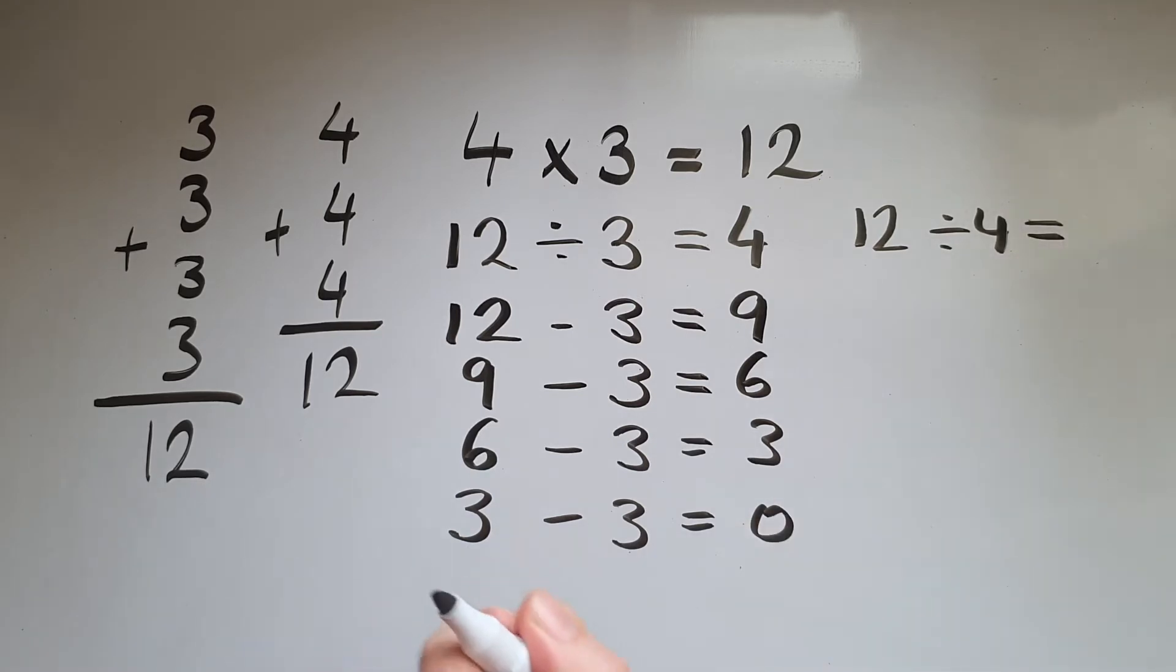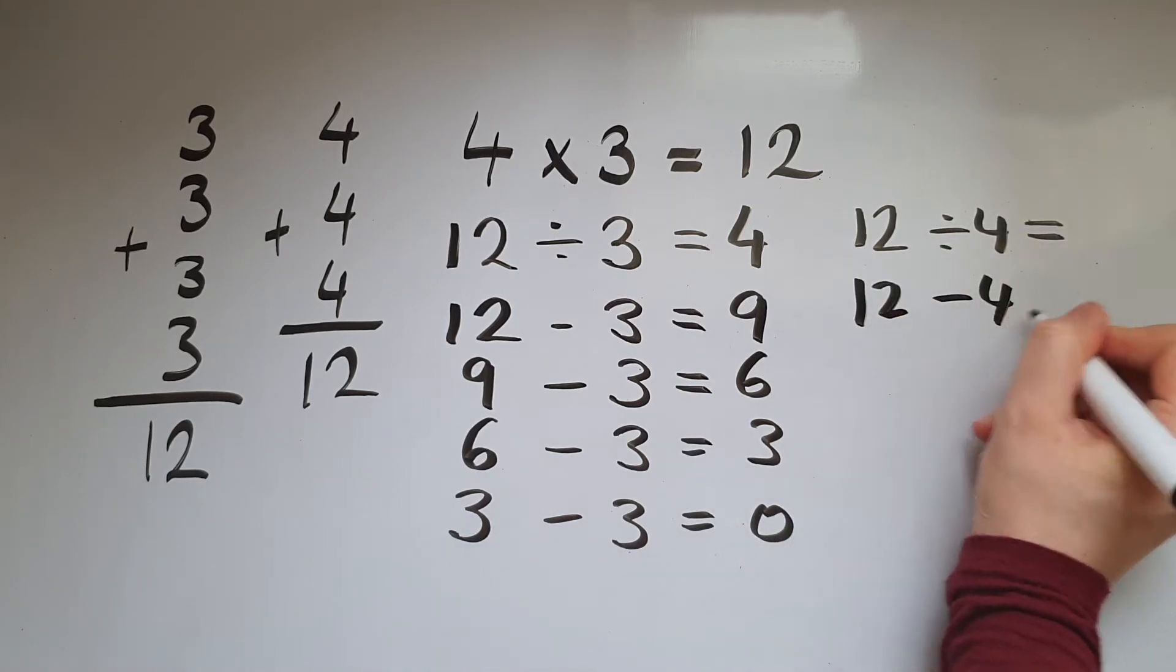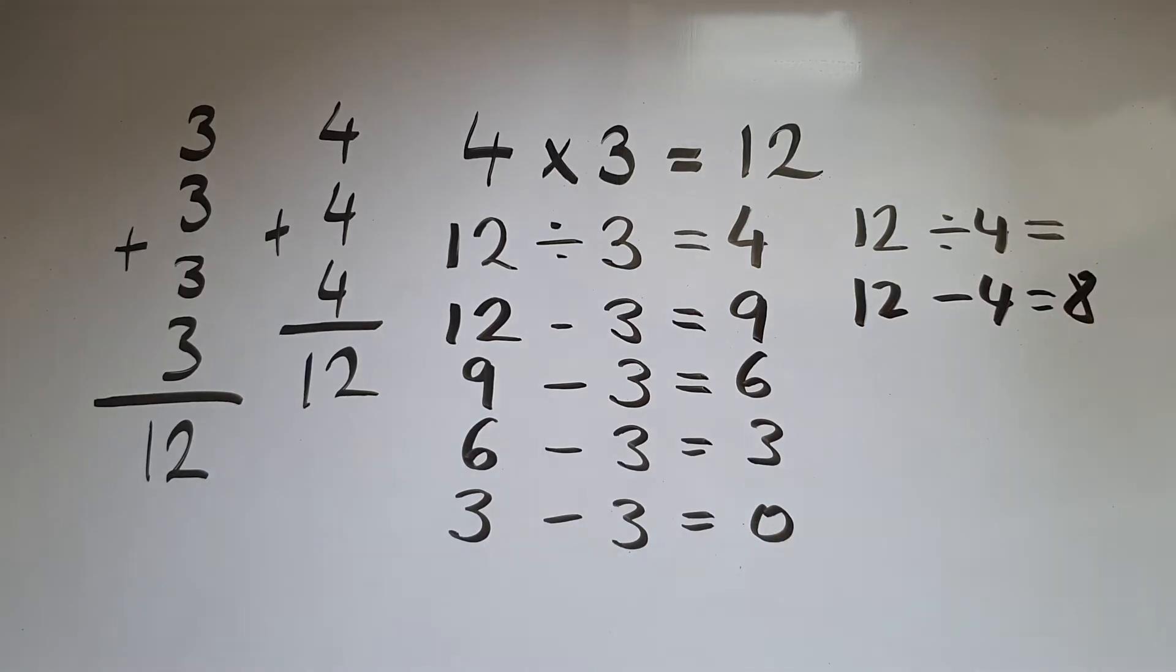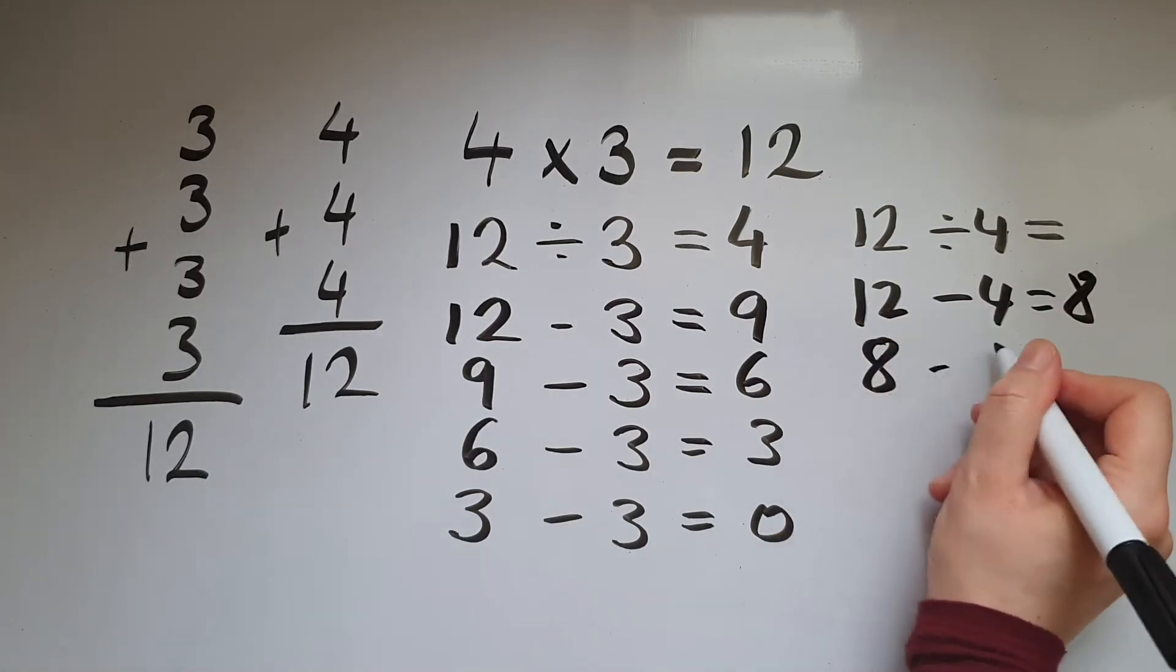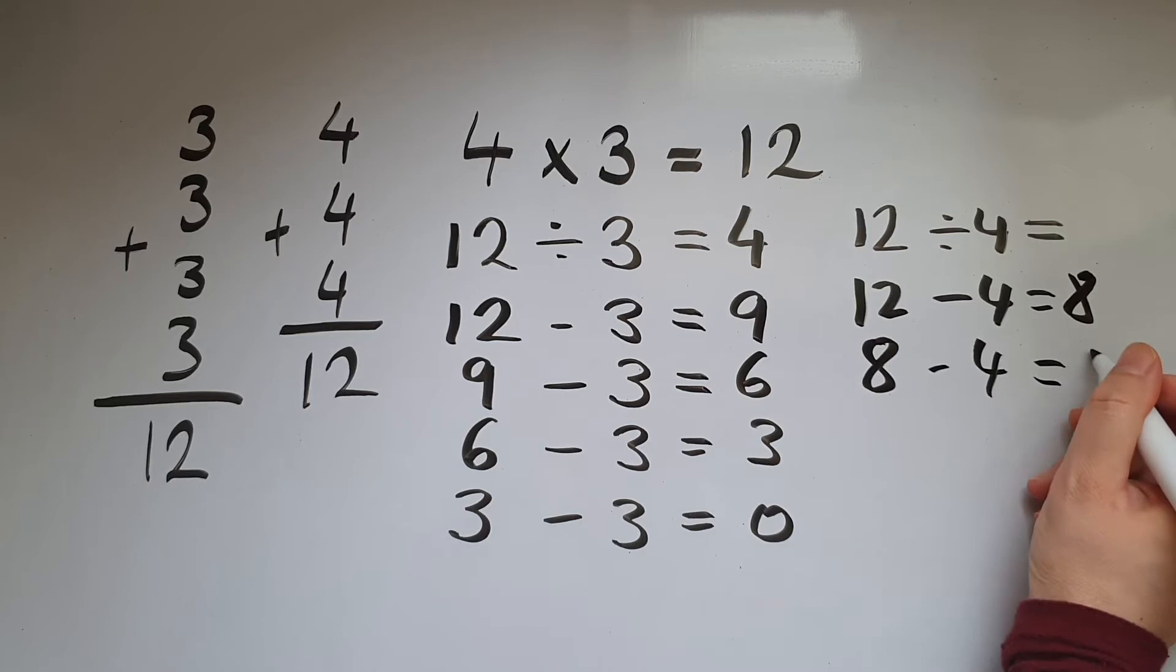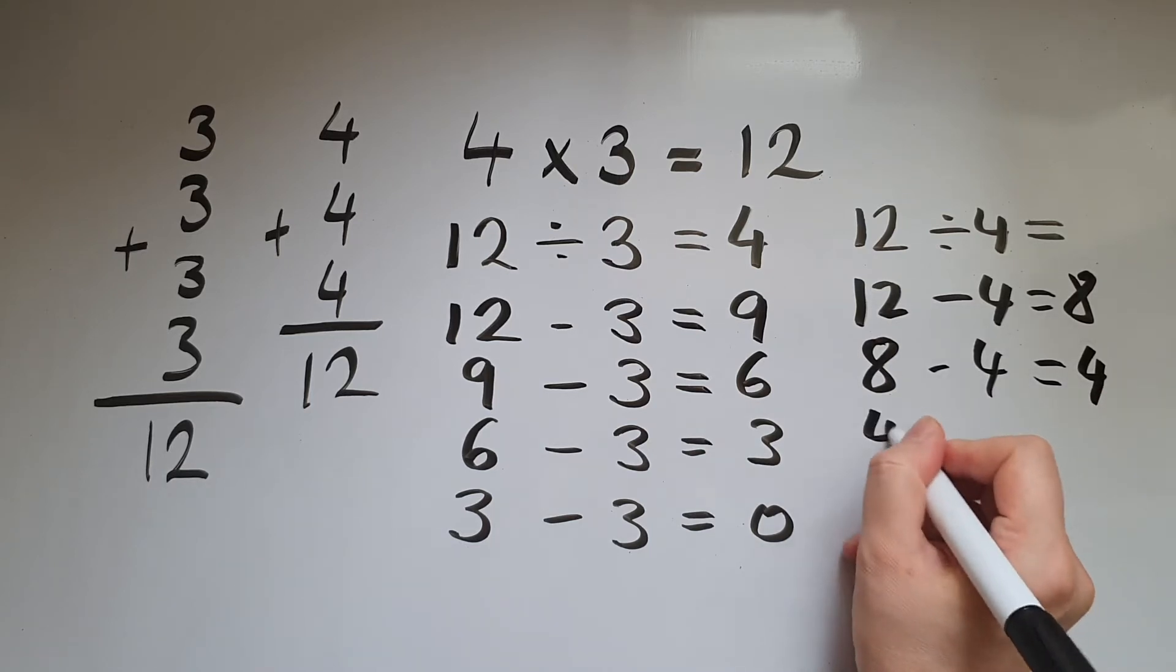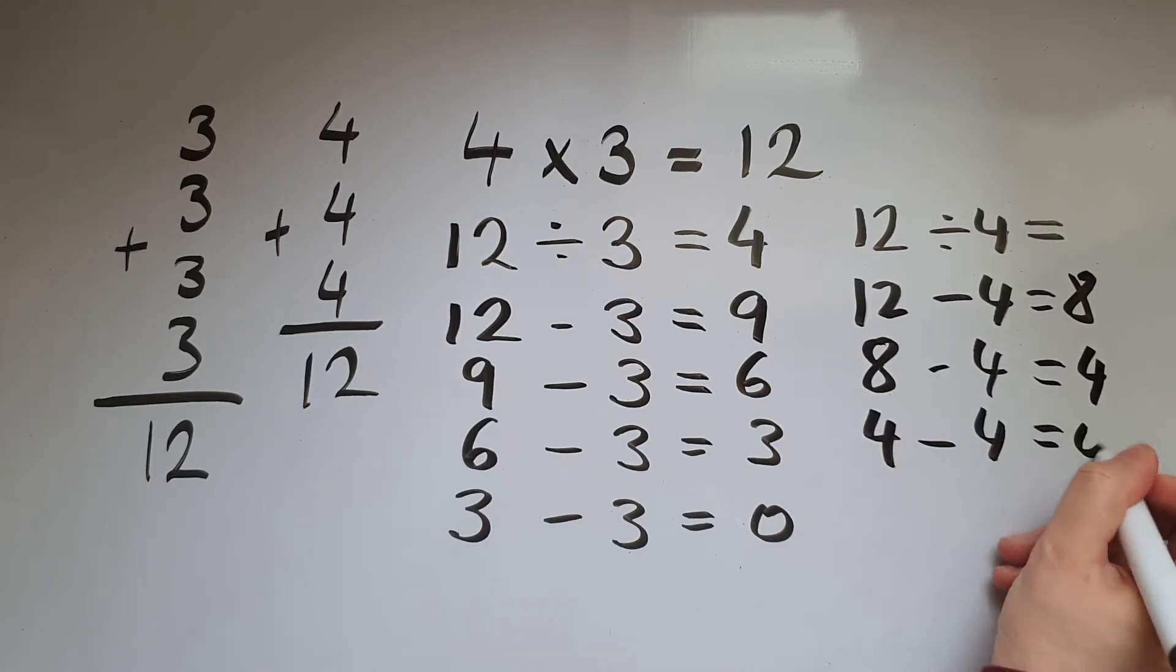So if you don't know that by heart, you can just go 12 take away 4 gives me 8, then 8 take away 4 gives me 4, 4 take away 4 gives me 0.